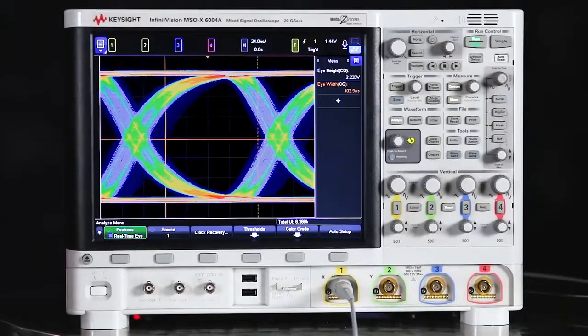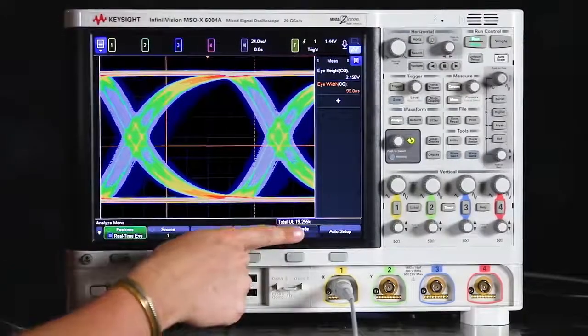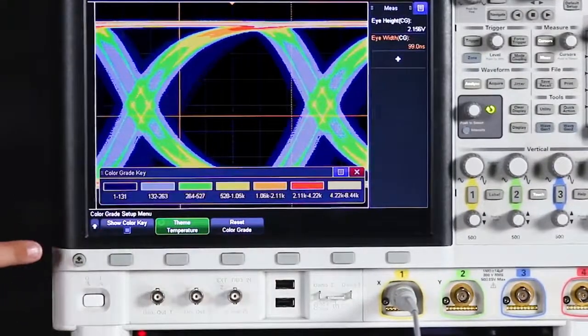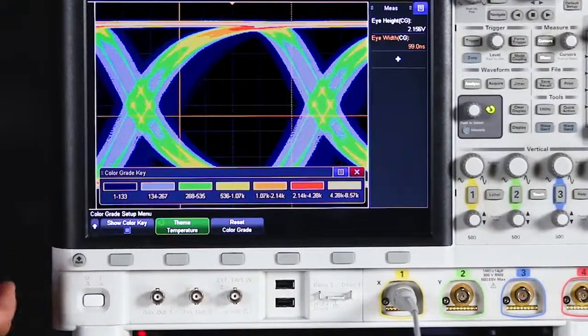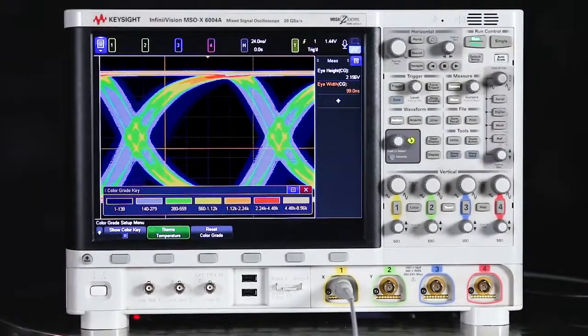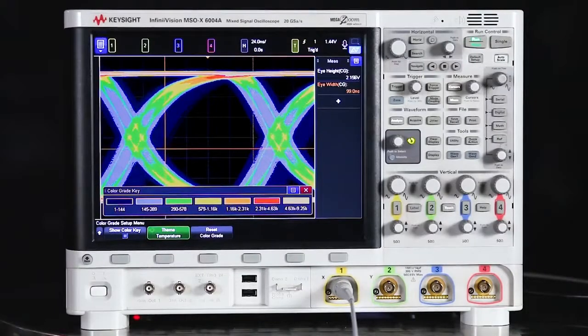And it uses color grading to display this information. So if we go into the color grade menu and select show color key, we're able to see just how frequent or infrequent the signal is coming through certain areas of the screen. So this will allow you to see if your signal is flipping bits correctly or if there are any delays or jitter.